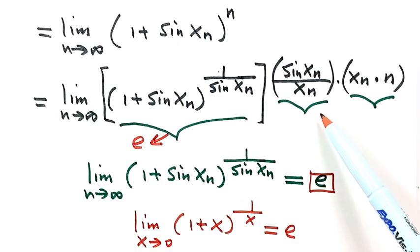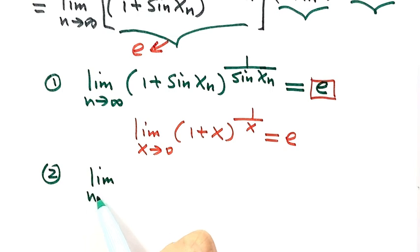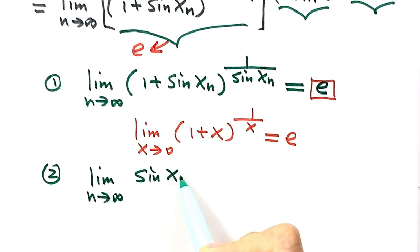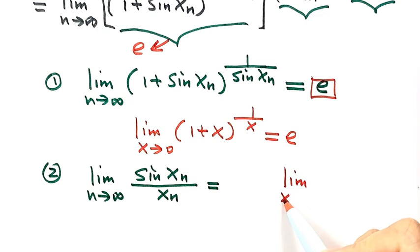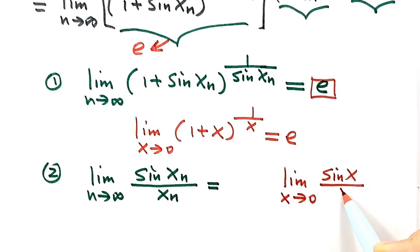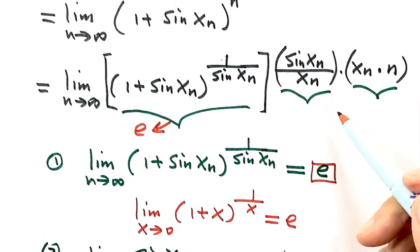The second part is the limit as n goes to infinity of sine(xₙ)/xₙ. Because xₙ → 0, this is the standard result: lim sin(x)/x as x→0 equals 1. So when n goes to infinity, sine(xₙ)/xₙ approaches 1. That is the result for the second part — this exponent approaches 1.